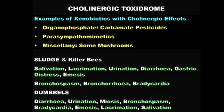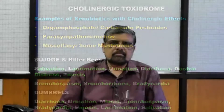There are two famous mnemonics for the cholinergic toxidrome. The first is SLUDGE: Salivation, Lacrimation, Urination, Diarrhea, Gastric distress, Emesis — plus 'killer bees': Bronchospasm, Bronchorrhea, and Bradycardia. The second mnemonic is DUMBBELLS, which adds what SLUDGE and killer bees miss — M for miosis, which is very commonly seen in cholinergic toxidrome.